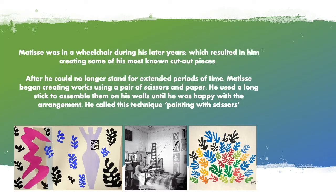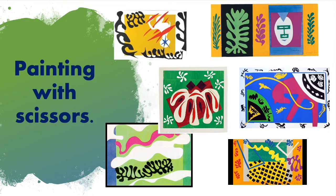When Henri first started his painting with scissors technique, it was actually in his later years where illness put him in a wheelchair, but he refused to let it stop him from creating art. While he was bedridden, he used to cut out the paper while sat in bed, and then use a long stick to position the pieces on the walls until he was happy with the arrangement. This process he called painting with scissors.